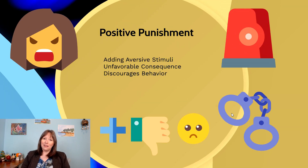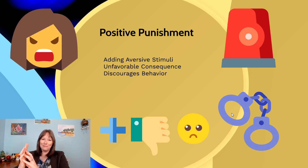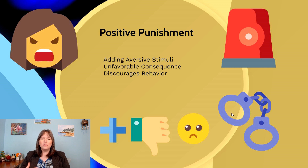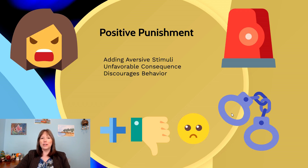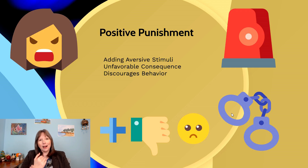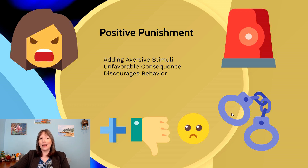We can also add something that makes us unhappy — this is positive punishment. Even though it has the word 'positive' in it, that does not mean pleasant; positive punishment is unpleasant because it involves adding something bad that makes us unhappy. We are adding an aversive stimulus resulting in an unfavorable consequence. Examples include yelling at someone, corporal punishment, putting dirty dishes in someone's bedroom, hearing a siren while speeding, or being arrested. Adding a time-out, making someone stand in the corner, wear a dunce cap, or write lines on the board are all positive punishments.